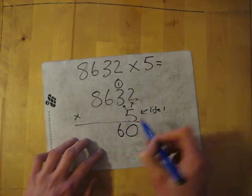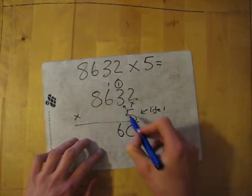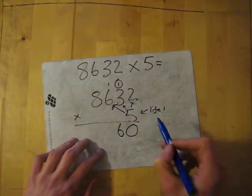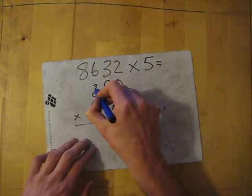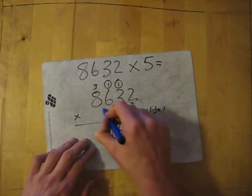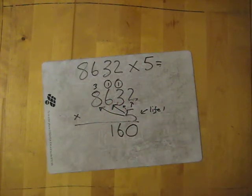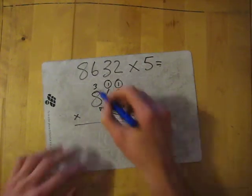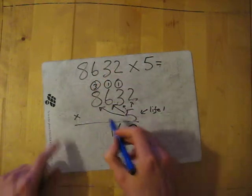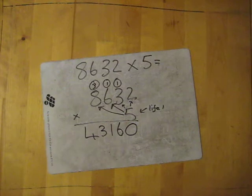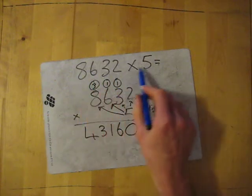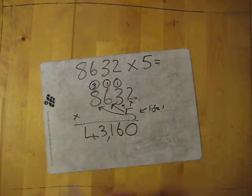Write down the 6 and carry the 1. Then we go 5 times 6, which is 30. Then add the 1, which is 31. Then finally 5 times 8, which is 40. And then add the 3, which gives me 43. Nothing else to kill. So we just write down the 43. So 8,632 times 5 is 43,160.